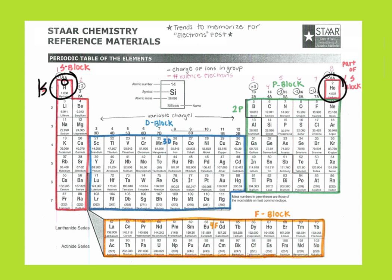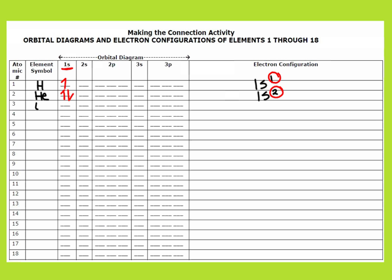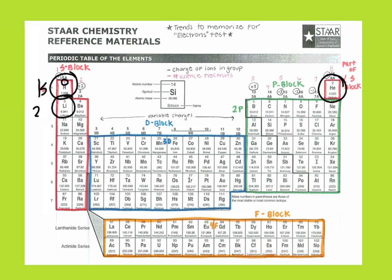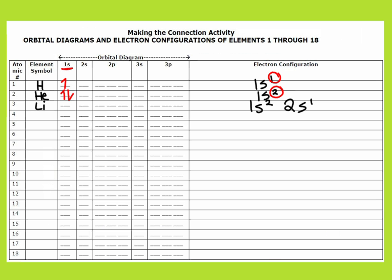Looking at the next one — this is lithium with an atomic number of 3, meaning 3 electrons. So I've got Li. It is 1s2, and it goes down to the 2 energy level. It is in the S block and it has 1 electron in that 2s region. So I should have a total of 2 plus 1 — 3 electrons: 2 electrons in the 1s and 1 electron in the 2s. This pattern continues throughout the periodic table.